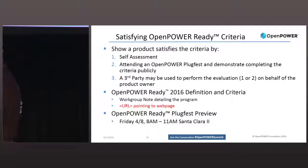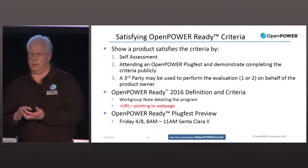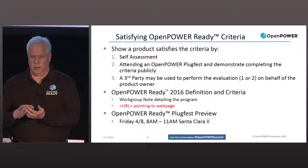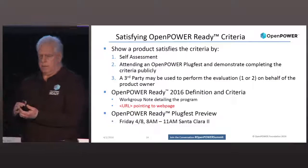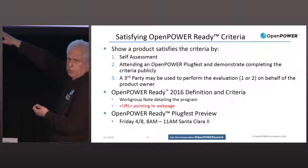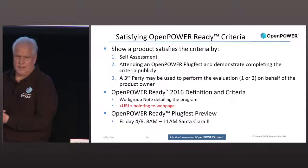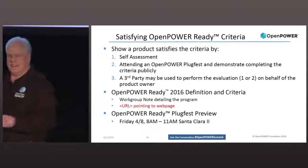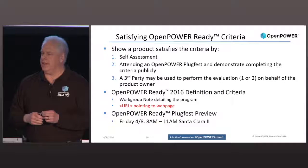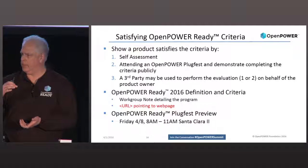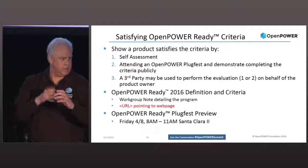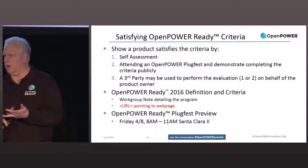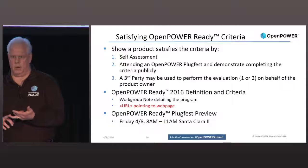We created a definition and criteria document, essentially a work group note — not a specification at this point. That web page goes live today. If you follow the link, you should be able to see it, or find it on the front page of the Open Power Foundation website. There will be an Open Power Ready symbol — click on it and it'll take you to the web page. You can get the criteria and see a list of all products currently marked. We have 68 already.